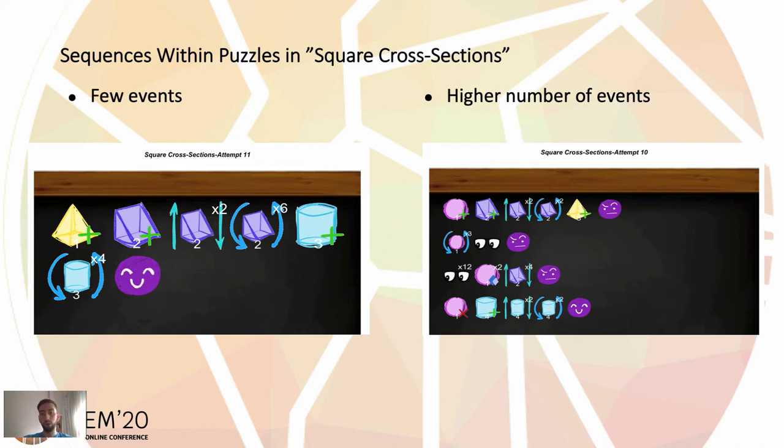And then the second one with a higher number of events. We focus on the second sequence. In the last line, we have the student, after deleting the sphere and creating the cylinder, submits the puzzle and completes it.